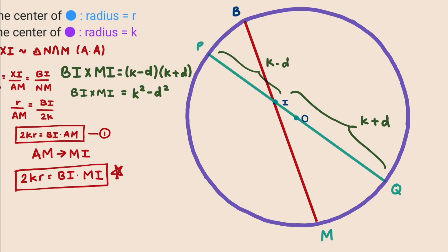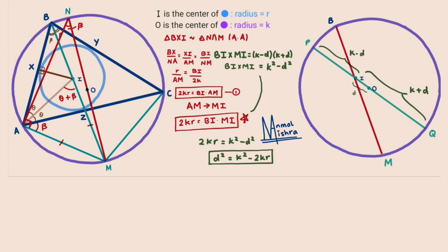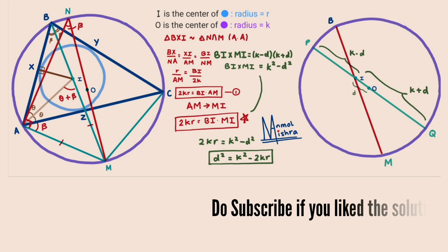Recalling the modified first equation 2KR = BI × MI, and comparing with the intersecting chord result BI × MI = K² − D², we get 2KR = K² − D². Rearranging the terms gives D² = K² − 2KR, which is exactly the result we were looking for. Thank you.